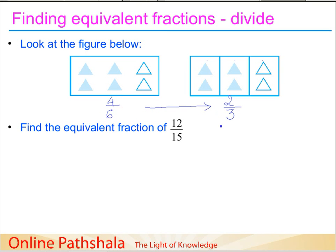Using this concept, the other way to find equivalent fractions for a fraction with a common factor is to divide by that common factor. For example, take twelve by fifteen. Since both twelve and fifteen can be divided by three, dividing gives four by five. So four by five is an equivalent fraction for twelve by fifteen.